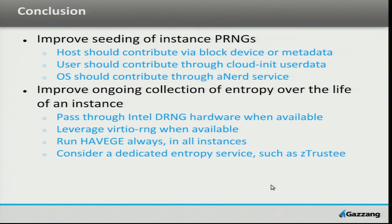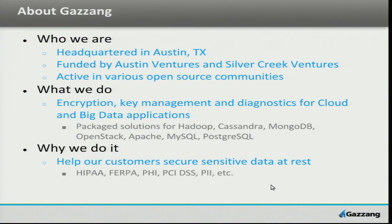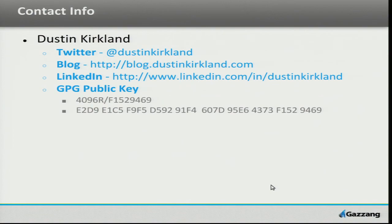In terms of improving the collection over the life of the instance: as soon as we have this digital random number generator hardware, that would be my choice to run my cloud on. I would absolutely use VirtIO RNG if I've got hardware random number generators on my hosts that I can pass through to guests. I just run Haveged always everywhere and would really like to see that in instances by default. Or consider a dedicated entropy service — random.net has something similar; there are a handful of ways you can pull random numbers over the internet. We're based in Austin, Texas, and do encryption key management and monitoring diagnostics; we've worked with a number of cloud and big data users helping them secure their data and manage their keys.